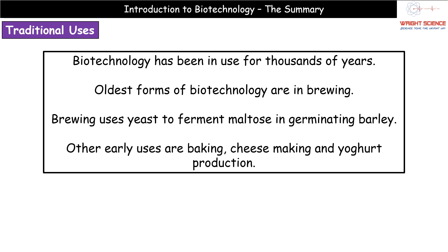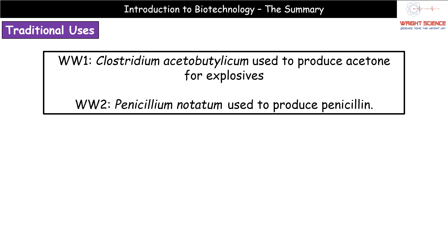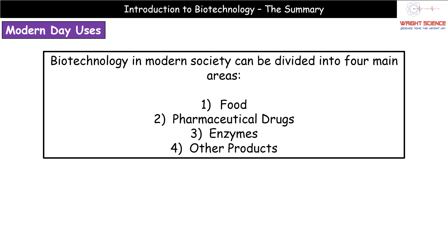Cheese making and yogurt production are also not new — things we've been doing throughout human history. Coming closer to modern times, in World War One we used Clostridium bacteria to produce acetone, which was then used in explosives. In World War Two, we had a more positive use: Penicillium was used to produce penicillin, finally giving us a method for treating infections. Penicillin avoided a lot of death — which is a good thing.